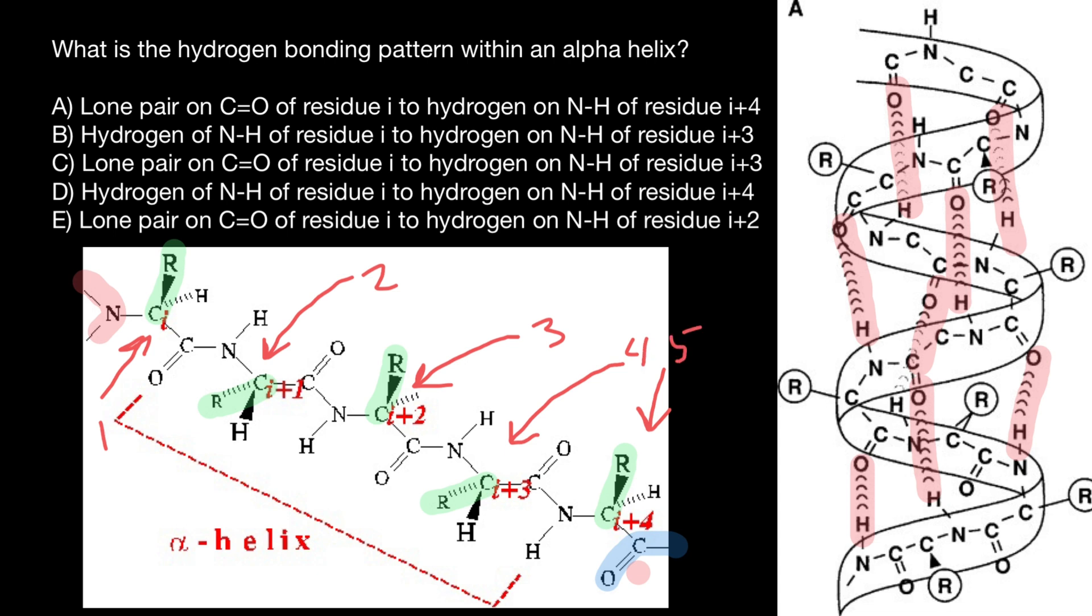And as you see, according to this diagram, the carboxyl group of the first amino acid makes hydrogen bond with amino group of the fifth amino acid. Carboxyl group of each amino acid is slightly negatively charged, and amino group of each amino acid is slightly positively charged. So that's why they make this hydrogen bond between them.